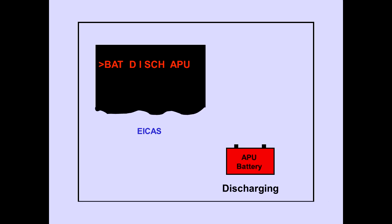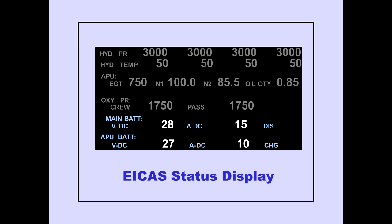The ICAS advisory message 'battery discharge APU' is displayed if the APU battery is discharging. Main and APU battery voltage, current in amps, and charge/discharge information is shown on the status display.